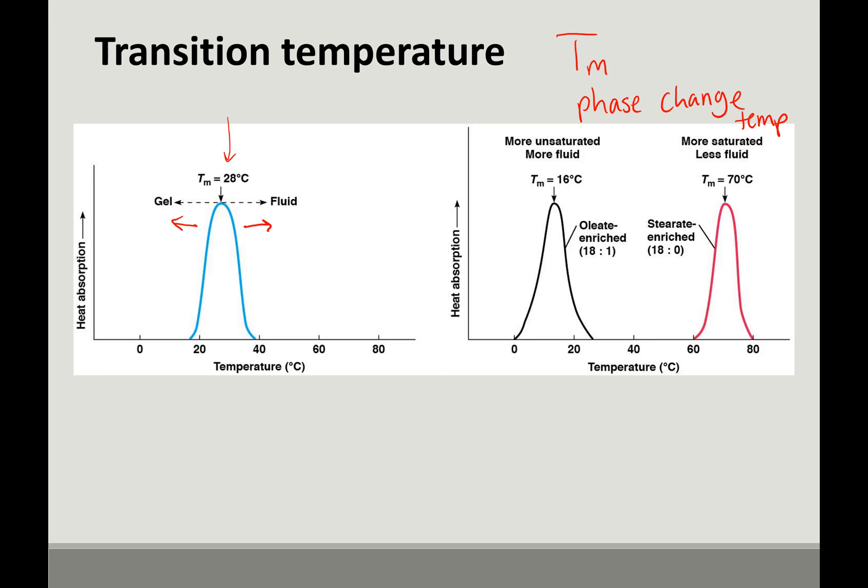Degree of saturation can affect the transition temperature. So as a membrane increases the amount of saturation, the amount of carbon-carbon double bonds, its transition temperature decreases. So that means it's more fluid, less saturated, just the opposite.